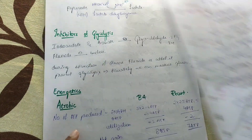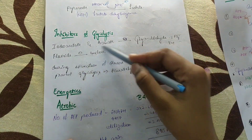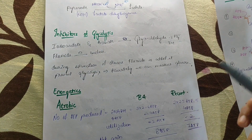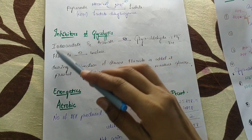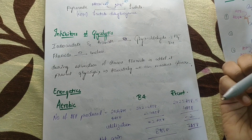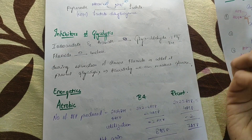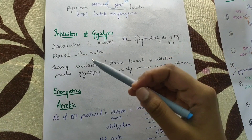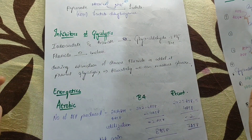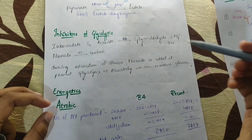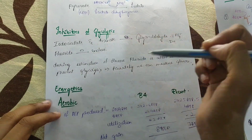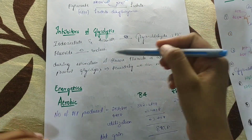During estimation of glucose, fluoride is added so that it doesn't give a false lower value. Because if fluoride is not added, the enolase enzyme will be active and there may be continuous glycolysis, so glucose will be broken down. This gives a lower-than-actual value of glucose in the blood, and we cannot get an accurate value. We get a more accurate result if we use fluoride, which is an inhibitor of enolase, by preventing glycolysis.